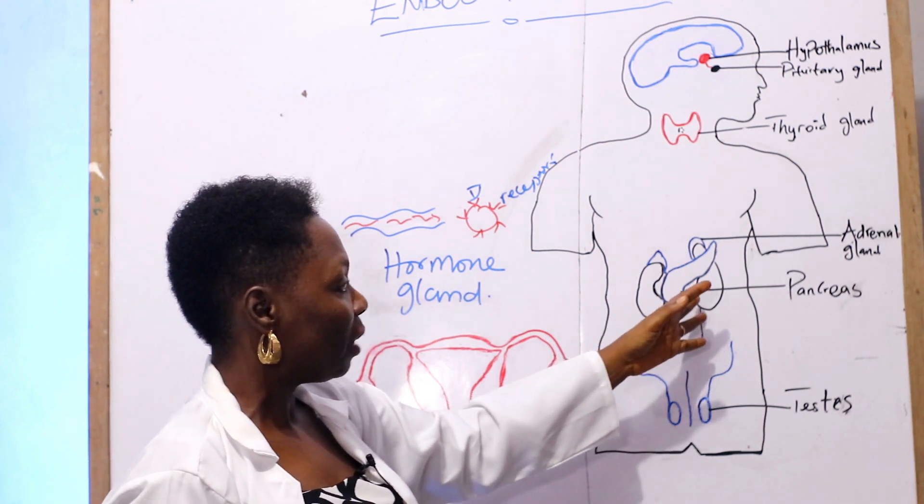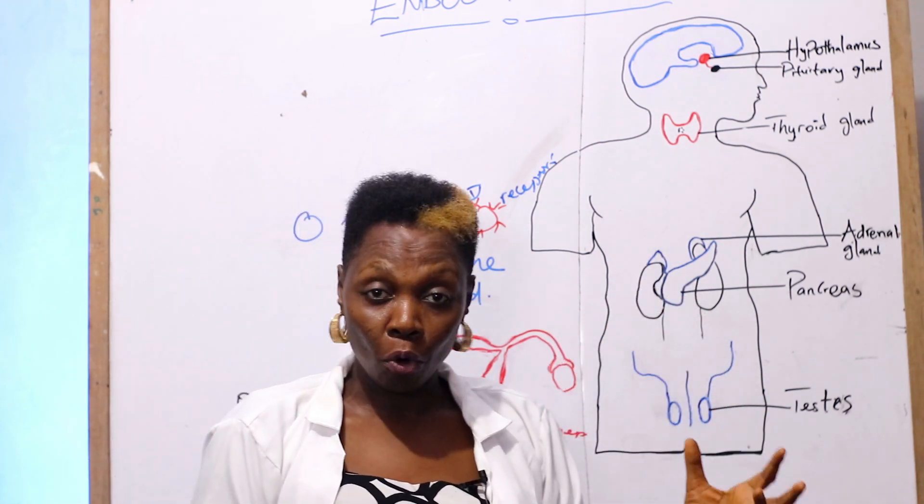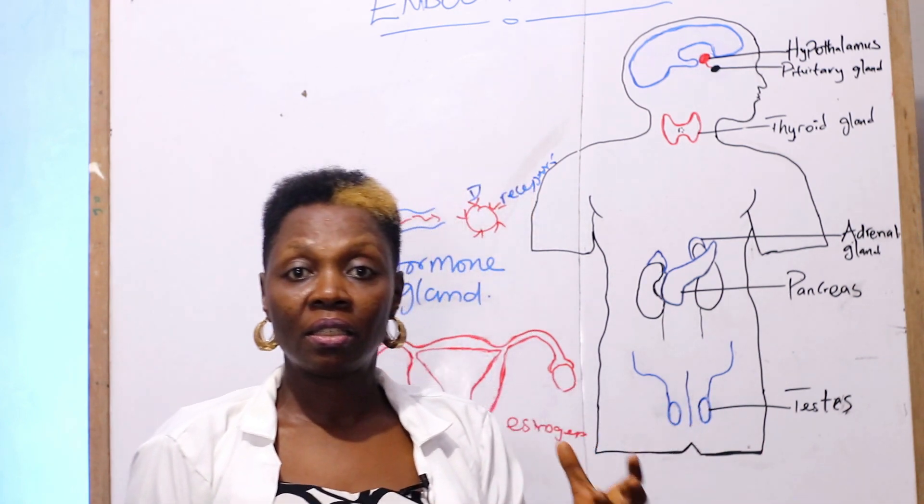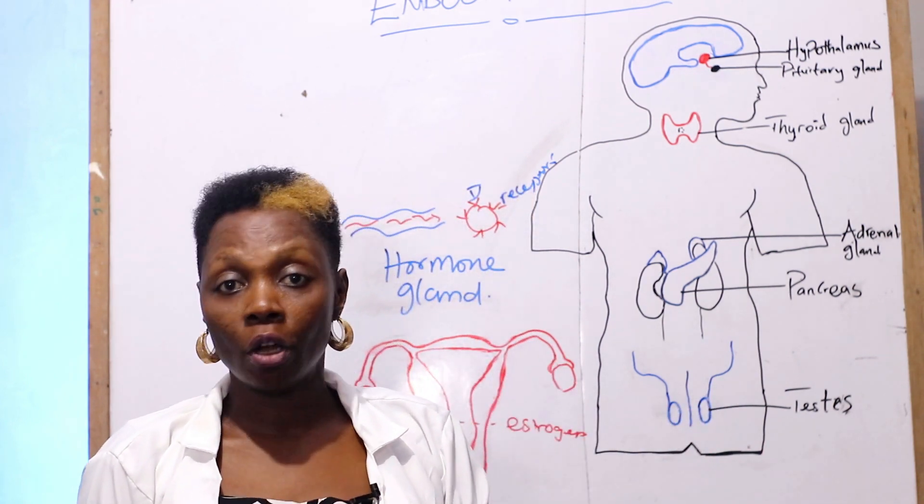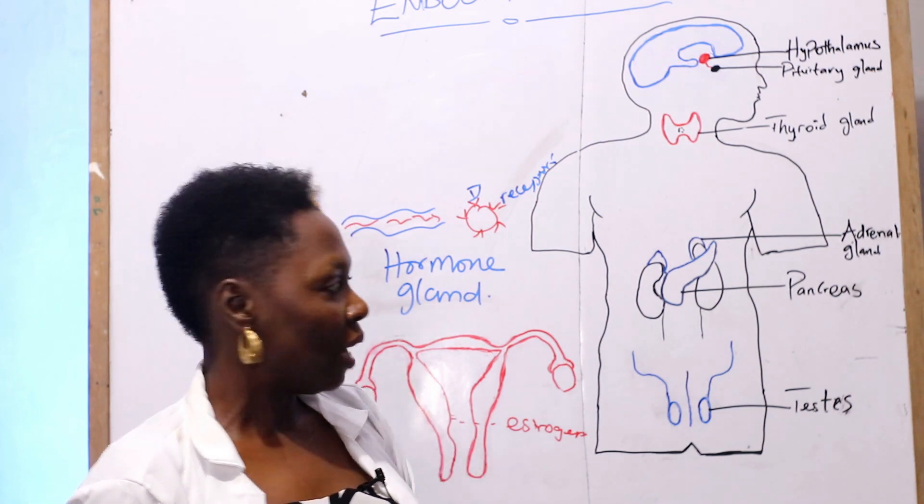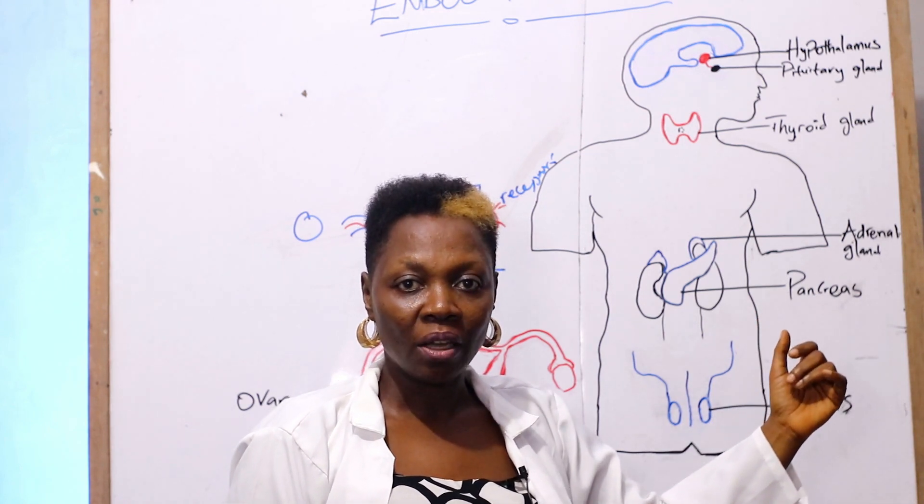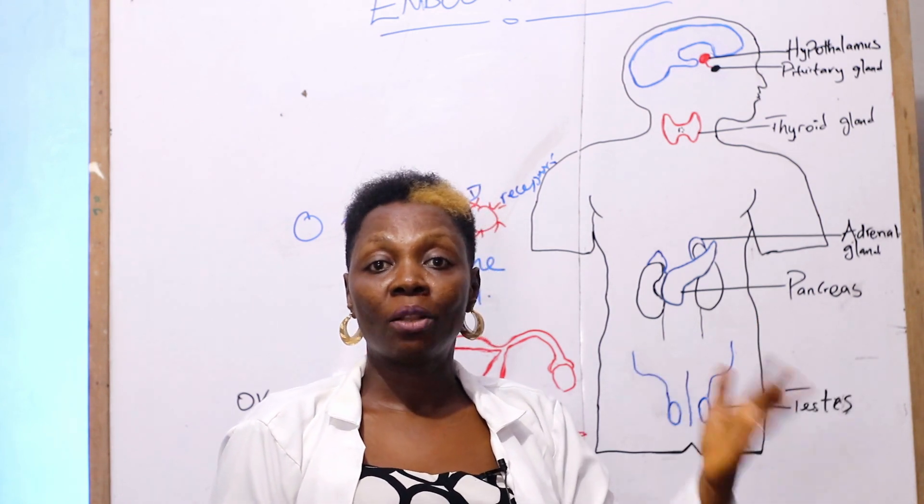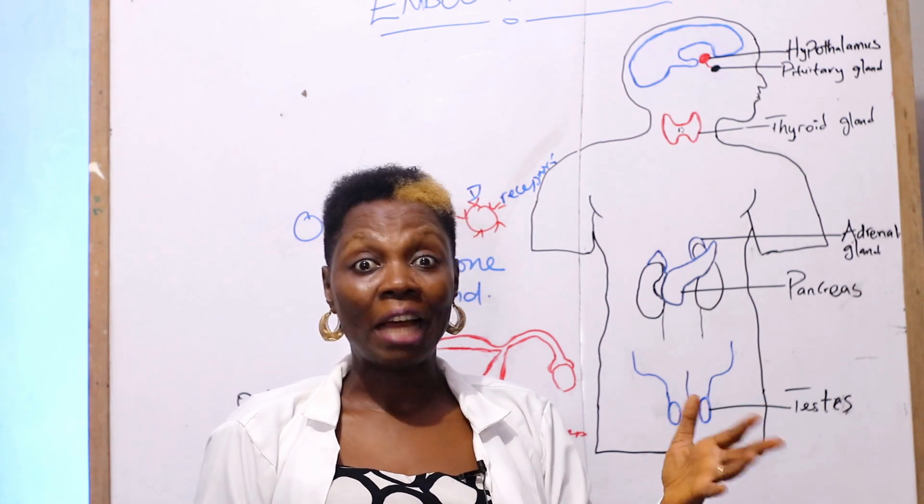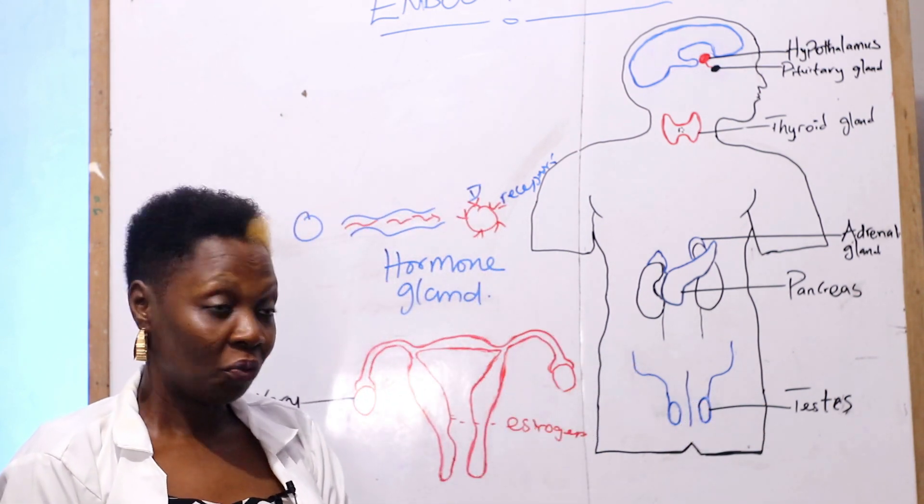Now, we have the pancreas. The pancreas is also a digestive hormone that secretes and synthesizes insulin and glucagon, responsible for carbohydrate metabolism. A derangement in the pancreas results in a pathological condition called diabetes. Now, we'll be looking at that in detail in subsequent videos.